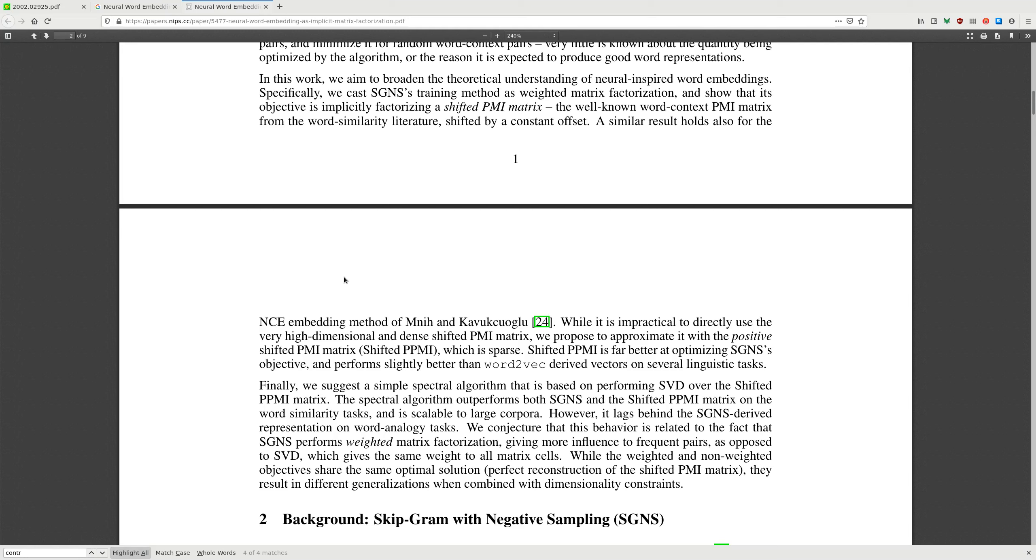A similar result holds also for the NCE embedding method. While it's impractical to directly use the very high dimensional and dense shifted PMI matrix, we propose to approximate it with the positive shifted PMI matrix, shifted PPMI, which is sparse. Shifted PPMI is far better at optimizing SGNS objective and performs slightly better than word2vec on several linguistic tasks. Finally, we suggest a spectral algorithm that is based on performing SVD over the shifted PMI matrix.